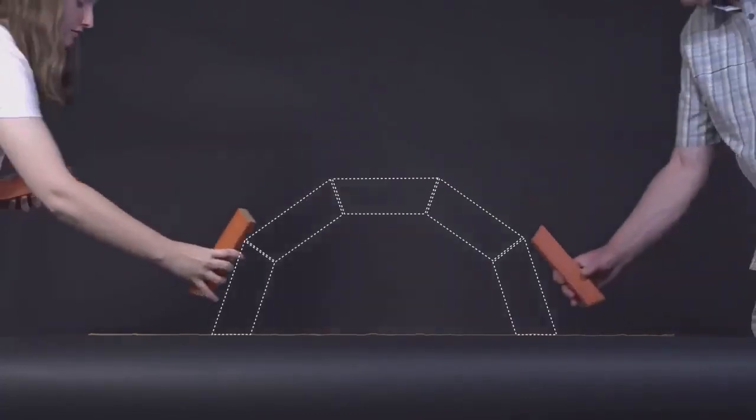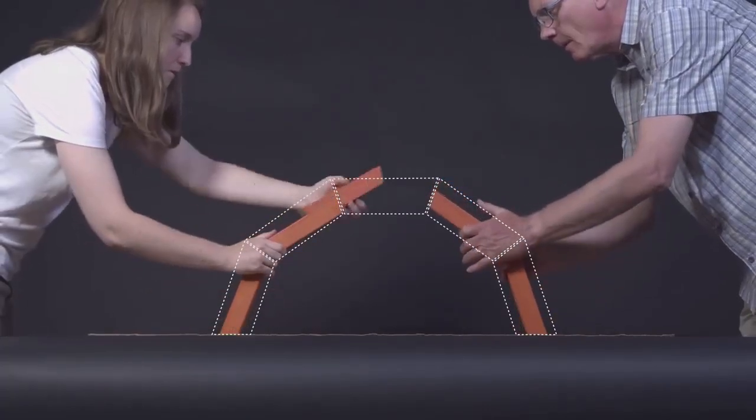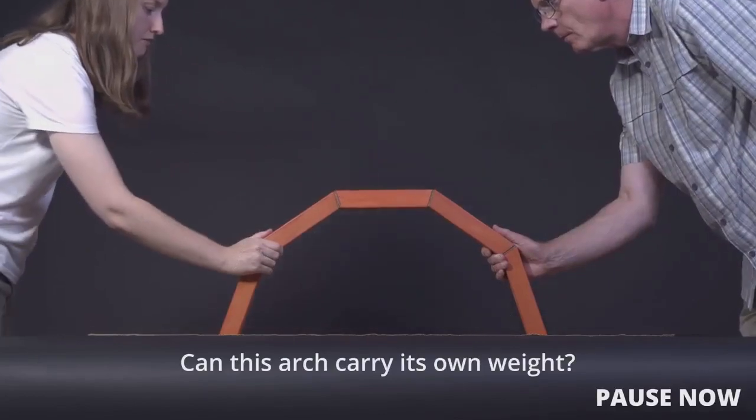Here is another semicircular arch. It is the same size and shape as the previous one, but its members are thinner. Can this thin semicircular arch support its own weight? You might have guessed that it would collapse, but can you explain why?